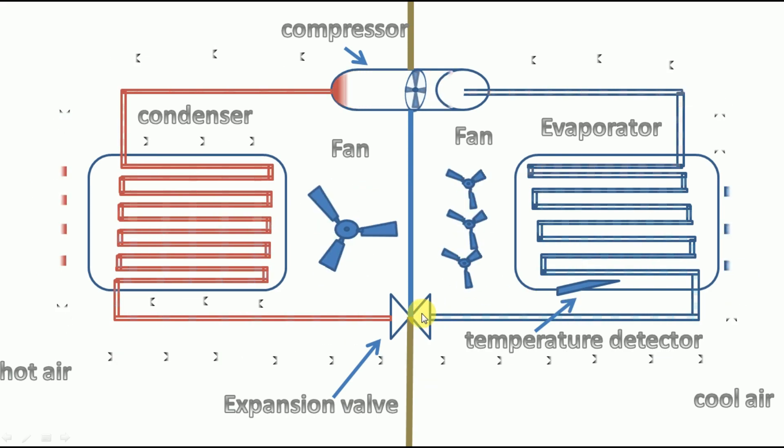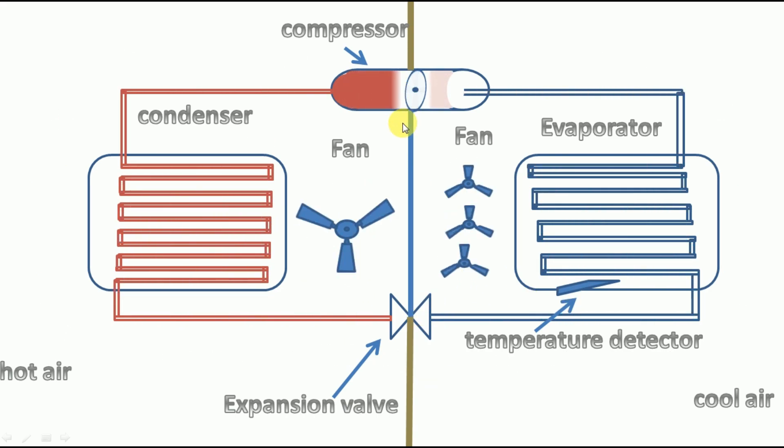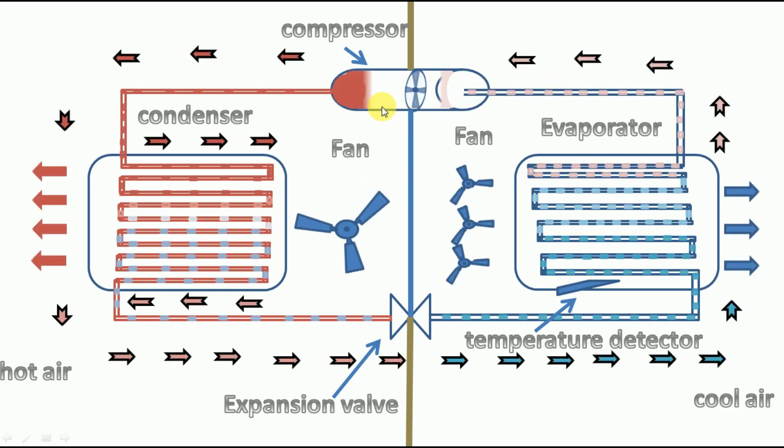From meter, the output signal is given to compressor and expansion valve. Step 2. The compressor sucks the air and compresses the gas into liquid due to change in pressure.